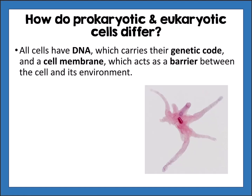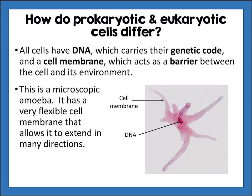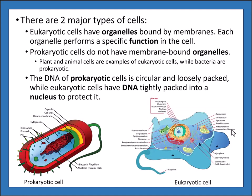All cells have DNA, which carries their genetic code, and a cell membrane, which acts as a barrier between the cell and its environment. This picture shows an amoeba, which has a very flexible cell membrane allowing it to extend in many directions. The cell membrane separates the inside of the cell from its environment, and the darker portion in the center contains the DNA.